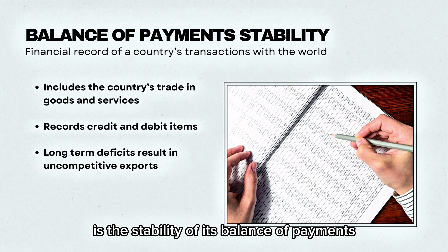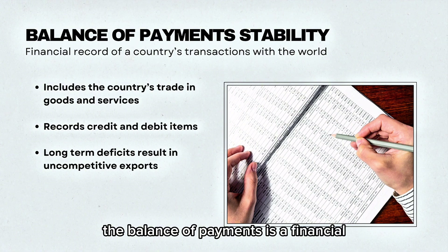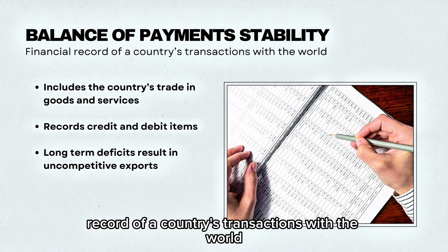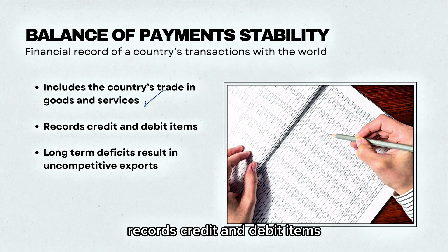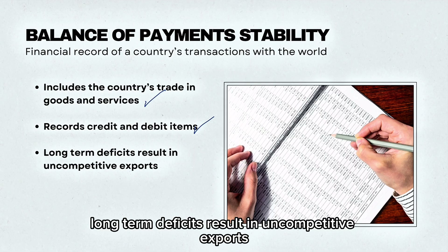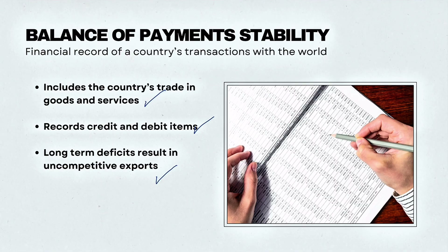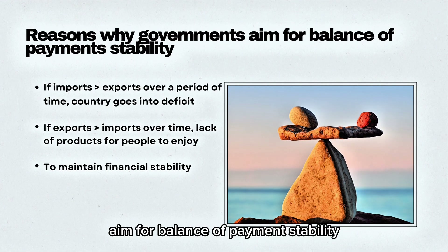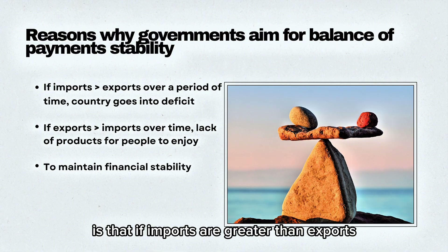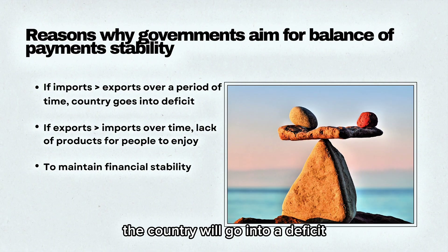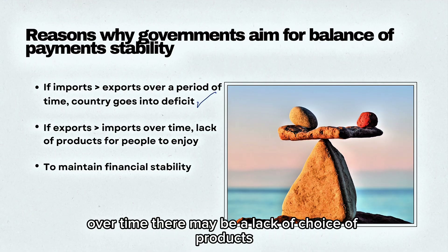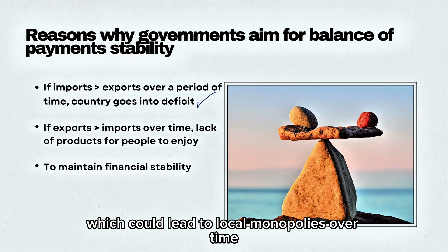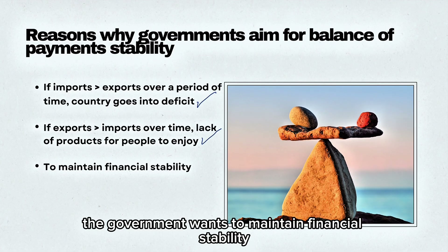Another aim for governments is the stability of its balance of payments. The balance of payments is a financial record of a country's transactions with the world. This includes the country's trade in goods and services, records credit and debit items, and long-term deficits result in uncompetitive exports. The reasons why governments aim for balance of payments stability is that if imports are greater than exports over a period of time the country will go into a deficit. And if exports are greater than imports there may be a lack of choice of products for customers, which could lead to local monopolies over time, and the government wants to maintain financial stability.